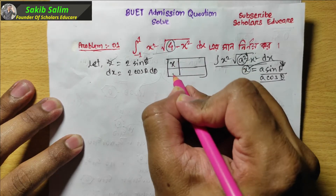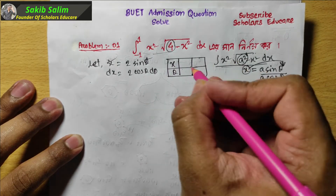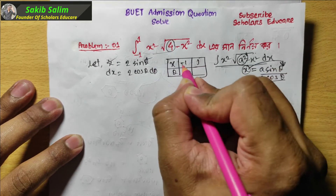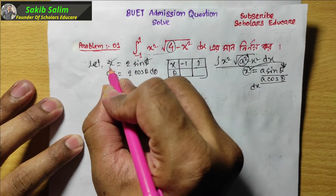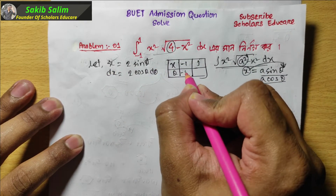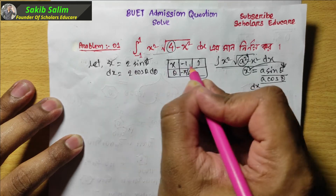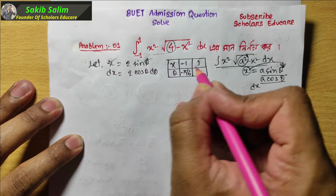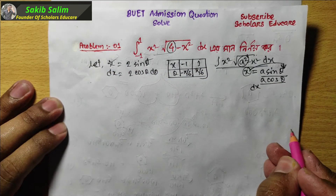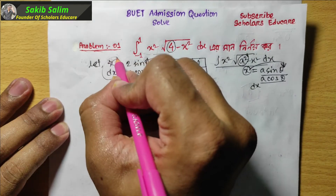We shift the x variable to the theta variable and change the limits. When x equals minus 1, theta is minus pi by 6, and when x equals plus 1, theta is pi by 6. Then we find the equation.